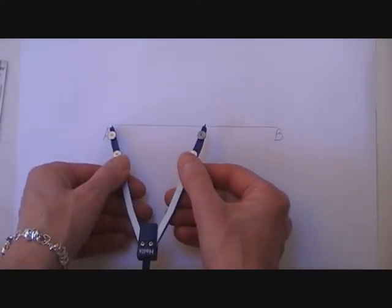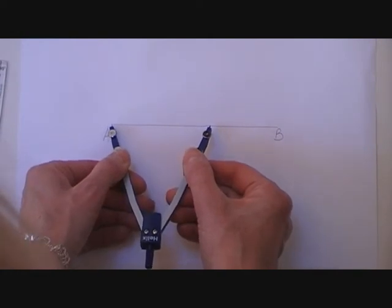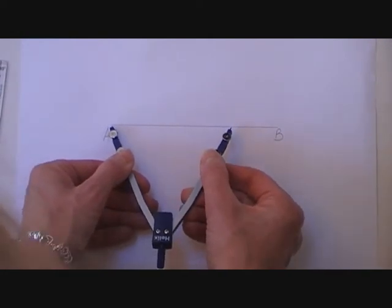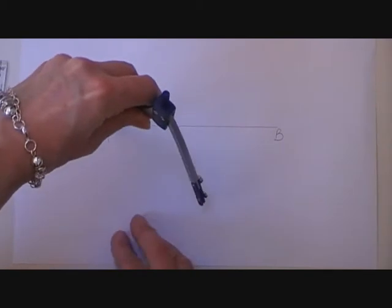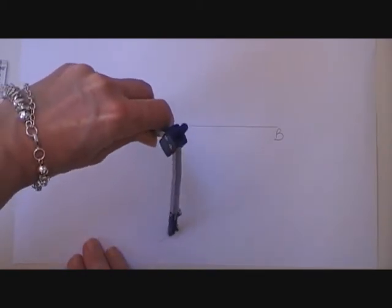So I'm going to stretch out my compass from A to over half the length of AB. I put the tip of the compass on A and I'm going to spin around and form a large arc.